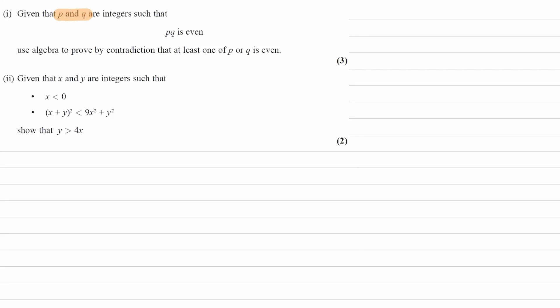Given that P and Q are integers, such that PQ is even, use algebra to prove by contradiction that at least one of P or Q is even.